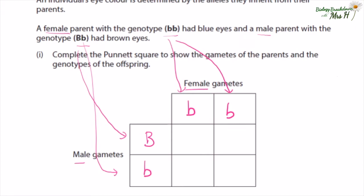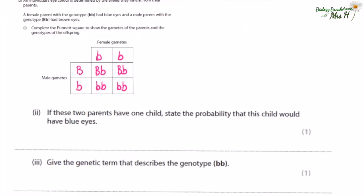Now we can work out the possible genotypes the offspring could have with these parents. The offspring here would inherit B from dad and b from mum, so Bb. This one here also gets B from dad and b from mum. This offspring inherits b from dad and b from mum, and so does this one.